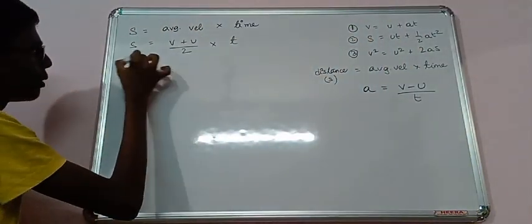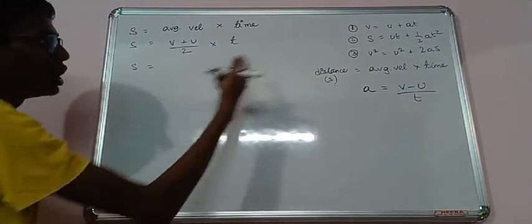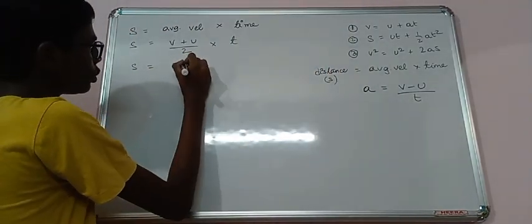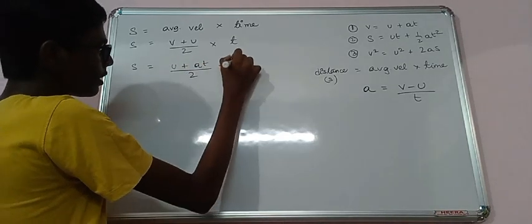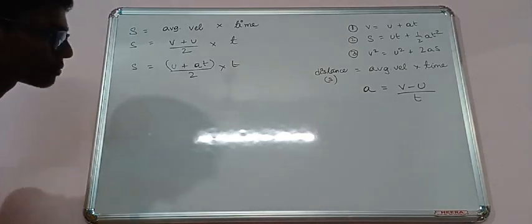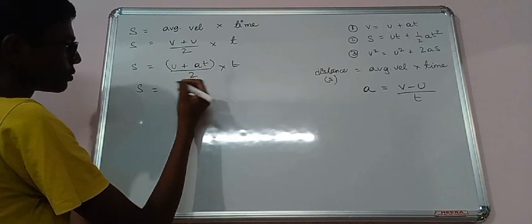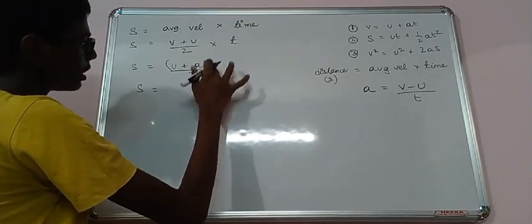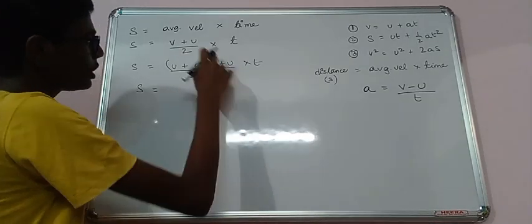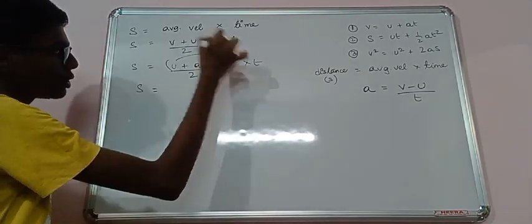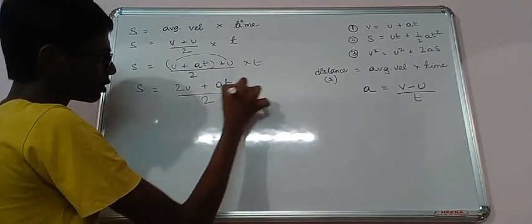Now by using this part, can we replace the value of V? Obviously we can. So can we write U plus AT by 2 into T. This obviously we can write. Now S equals to, I have missed out this part. This U has to be kept. This U. Now we will add these two U. So 2U plus AT by 2 into T.